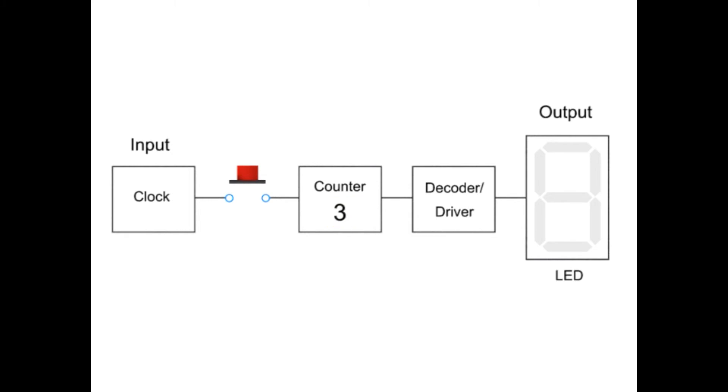The binary output from the counter, representing the number 3, is translated by the decoder into a 7 segment code, and the LED display driver lights the appropriate segments of the LED display.